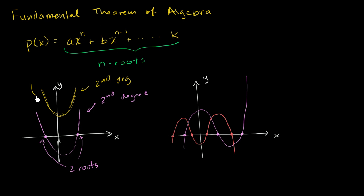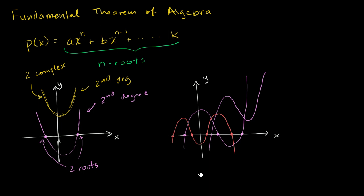But we will have two complex roots. The non-real complex roots always come in pairs. For example, if you have a third degree polynomial that looks something like this — where it has one real root — the fundamental theorem of algebra tells us it necessarily has two other roots. So we know the other two roots must be non-real complex roots.